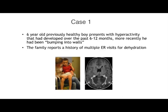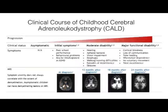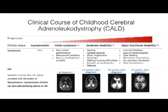On brain MRI he had a classic lesion in the posterior region of the white matter with a garland of contrast enhancements apparent. This is rather typical for the clinical course of childhood cerebral ALD.